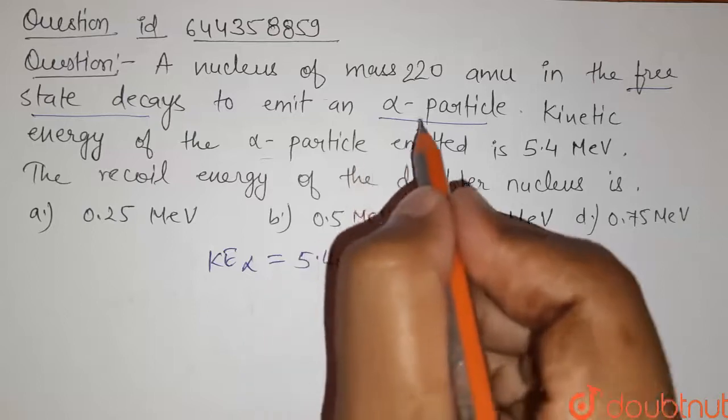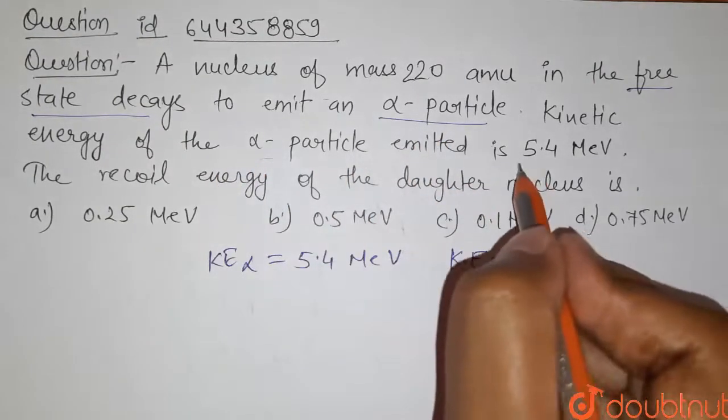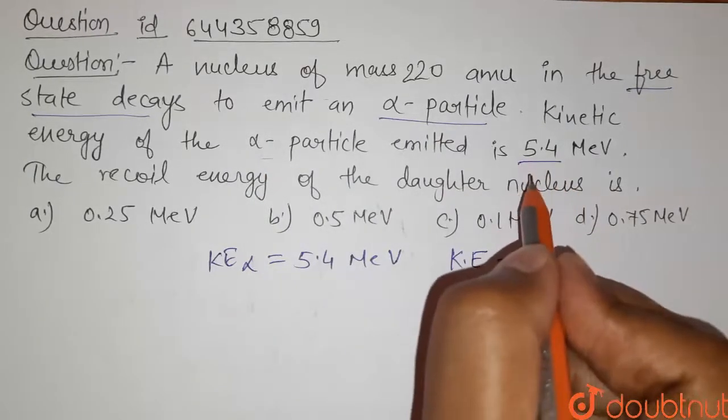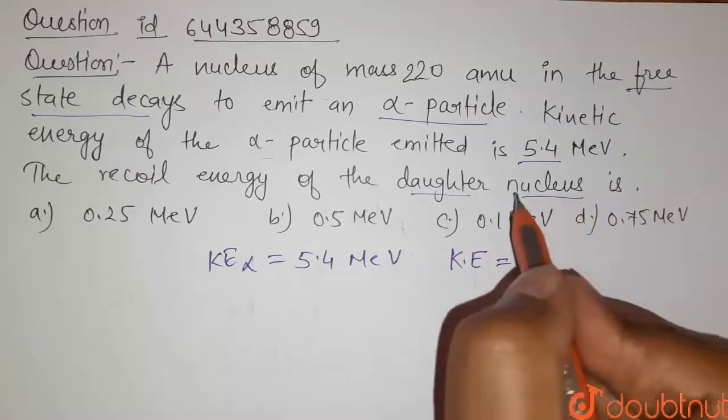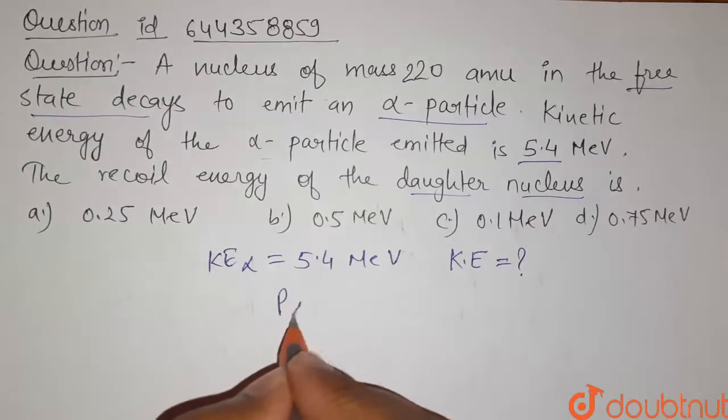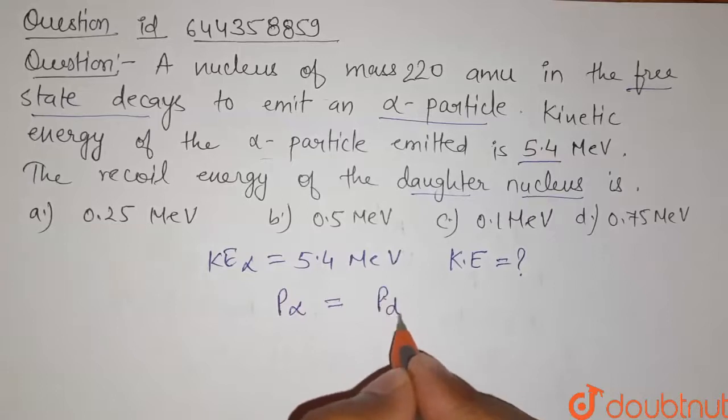And after emission, the alpha particle has generated some kinetic energy, that means it has generated some momentum. So to conserve the momentum, the daughter nuclei will generate the same momentum but in the opposite direction. It means the momentum of alpha particle equals the momentum of daughter nuclei.